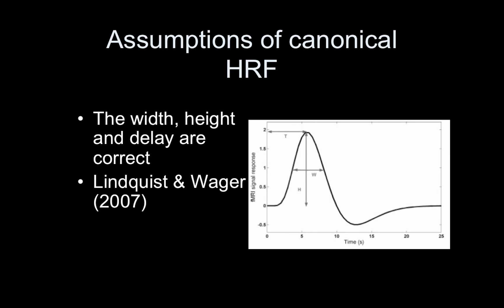We actually saw that before we used convolution — in the last lecture, when we just used the box car, it couldn't match the peak of the signal very well. When we applied convolution, it met the peak better. There are ways to actually estimate these three parameters separately. The Lindquist and Wager paper from 2007 looks into different approaches for doing that, though I'm not going to discuss it here — just mentioning it if you're interested.